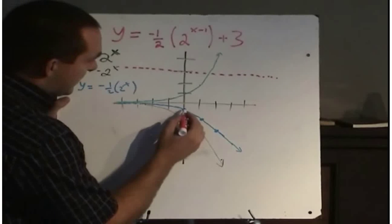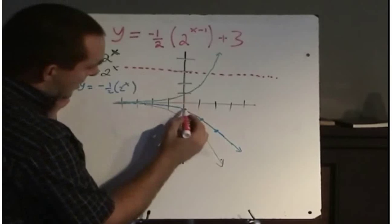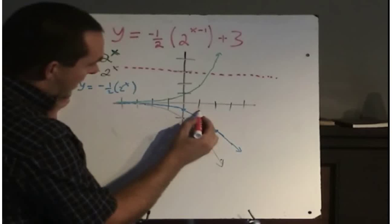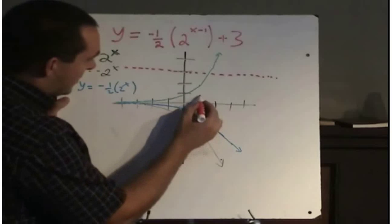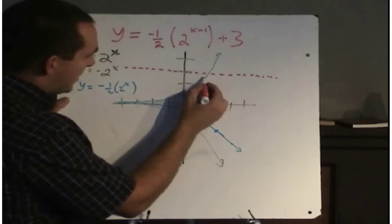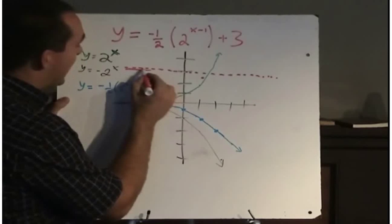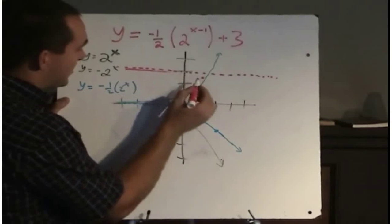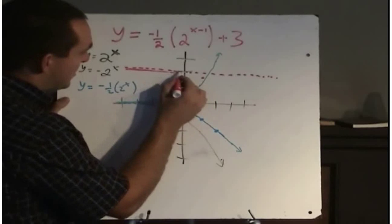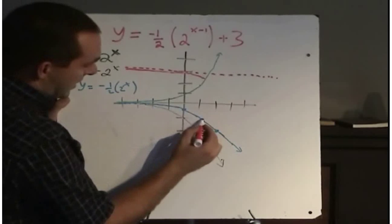So moving this point, moving this point right 1 and up 3, we'll set it right here. So we're going to be zooming along the x-axis. Sorry, we're going to be zooming along our asymptote now, which is no longer the x-axis. And we're going to cut through that point.